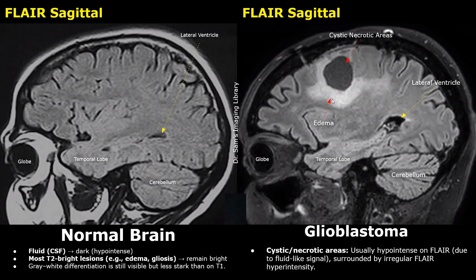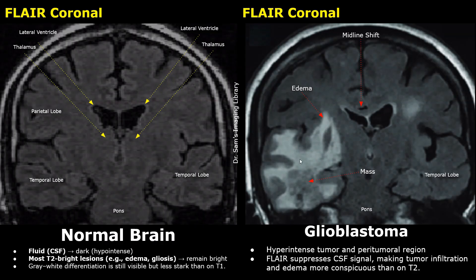Here we have a different case of a glioblastoma in the coronal plane. This is the mass — it is hyper-intense and heterogeneous, and it is surrounded by hyper-intense and somewhat homogeneous edema. Mass effect is noted; it has caused ventricular compression and a mild midline shift.